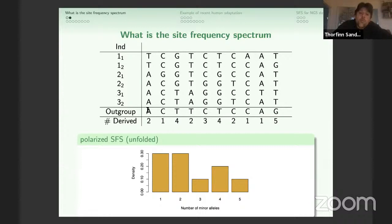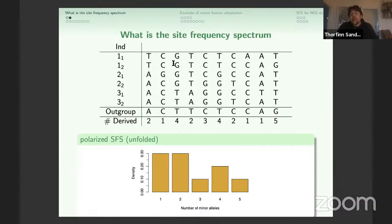So instead of counting minor alleles, we count the number of non-ancestral (derived) alleles. For the first position we observe two non-A alleles; the second position has one non-C. If we count the number of non-ancestrals, we don't need to worry about triallelic sites. At the final position, the outgroup is G, and we observe five non-ancestral alleles. We can also work with reference and alternative alleles in VCF files, but for the SFS the ancestral/derived framework is the obvious choice when possible.